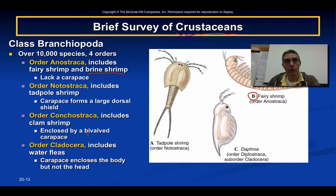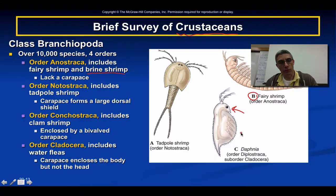The fourth order is Cladocera, which includes the water fleas. In this case, the carapace encloses the body but does not enclose the head. You can see that over here on the right with this Daphnia, which is an example of this order. The carapace covers this part of the body, but the head region is free of that carapace.